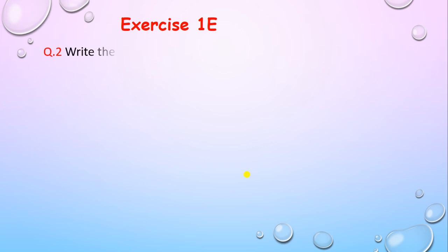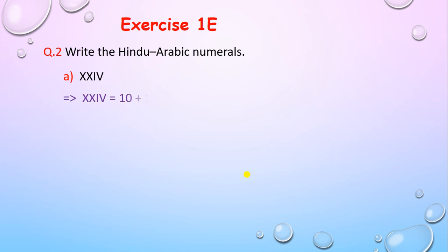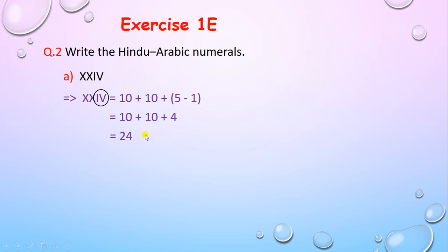Let's solve the next question: write the Hindu-Arabic numerals. First example: XXIV. X stands for 10 and the next X stands for 10. I comes before V, so the smaller value comes before the bigger value, meaning we subtract 1 from 5 to get 4. So the answer is 10 plus 10 plus 4 equals 24.